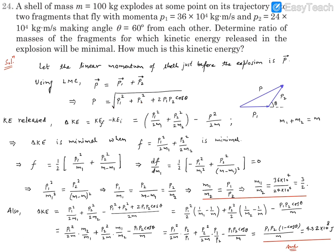Now for the kinetic energy released: the final kinetic energy minus the initial kinetic energy gives us the increase due to the explosion. Final kinetic energy is P1²/2M1 + P2²/2M2, where M1 and M2 are the masses of the two fragments. The initial kinetic energy is P²/2M, where M is the total mass. So ΔKE = P1²/2M1 + P2²/2M2 - P²/2M.